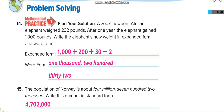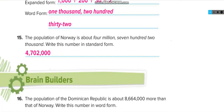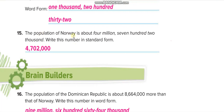The population of Norway is four million — so we write 4 comma because it's in the millions period — and seven hundred two thousand, seven hundred two in the thousands period. That's it; nothing in the ones.